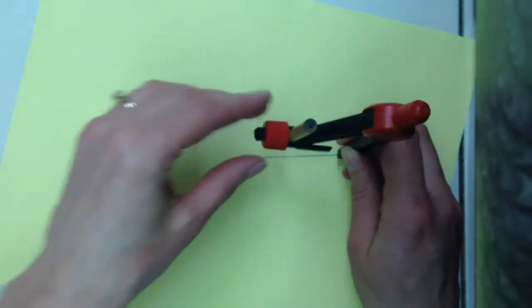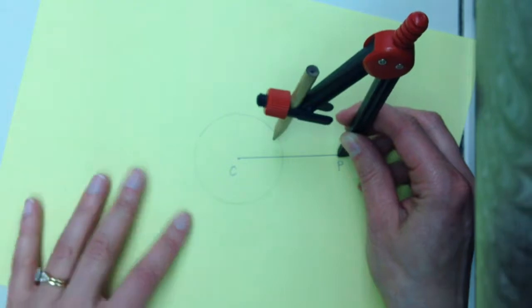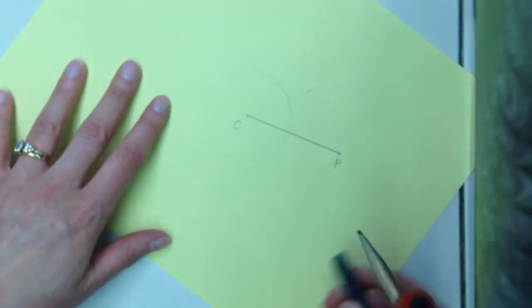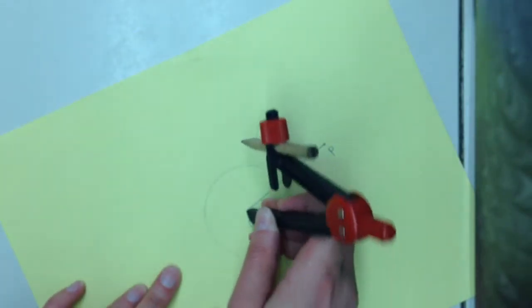So I'm going to take my compass, make sure it's open more than half the length of the line segment, make arcs above and below, and then repeat my steps over at point C.